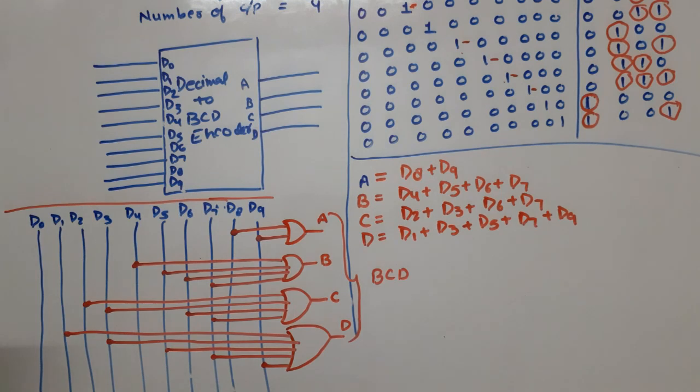Now this is the logic diagram of decimal to BCD encoder. Thank you so much. If you have any doubt related to this topic, please write down in the comment section. Keep watching, thank you.